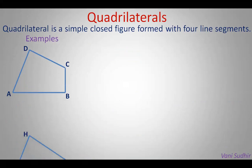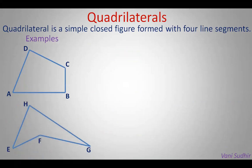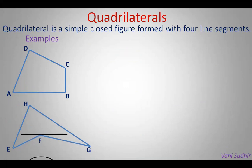Let us take one more quadrilateral. EFGH is another quadrilateral in which angle EFG is more than 180 degrees. So it can be named as a concave quadrilateral.